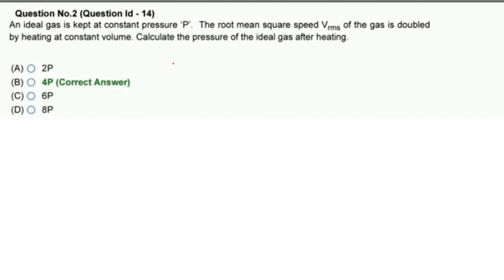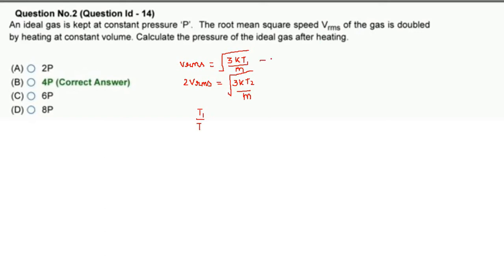The V_RMS formula is: V_RMS = √(3kT/m). So initially V1 = √(3kT1/m), and after doubling, 2·V_RMS = √(3kT2/m). Dividing equation 1 by equation 2 gives T1/T2 = 1/4.